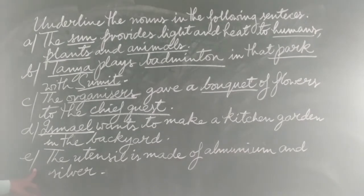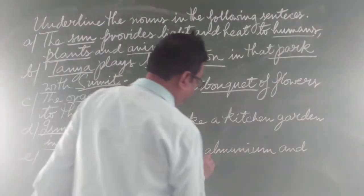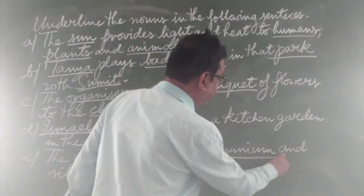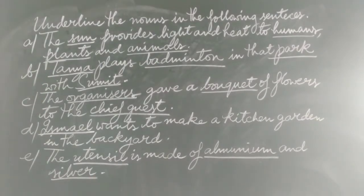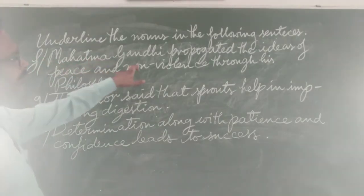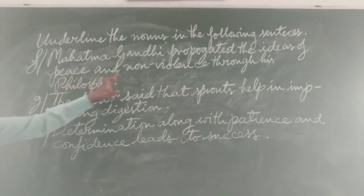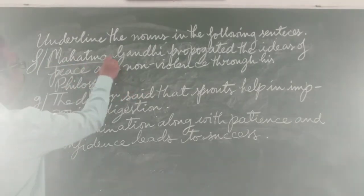Now come to E: 'The utensil is made of aluminium and silver.' The utensil is a common noun. Aluminium is a material noun, and silver too is a material noun. Now look at sentence F: 'Mahatma Gandhi propagated the ideas of peace and nonviolence through his philosophy.' Here, Mahatma Gandhi is a proper noun.